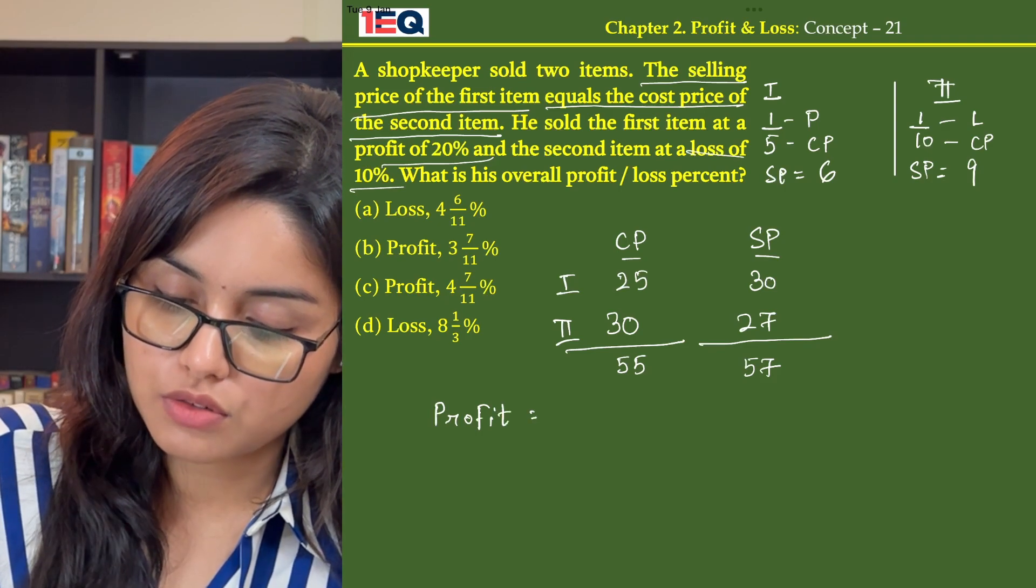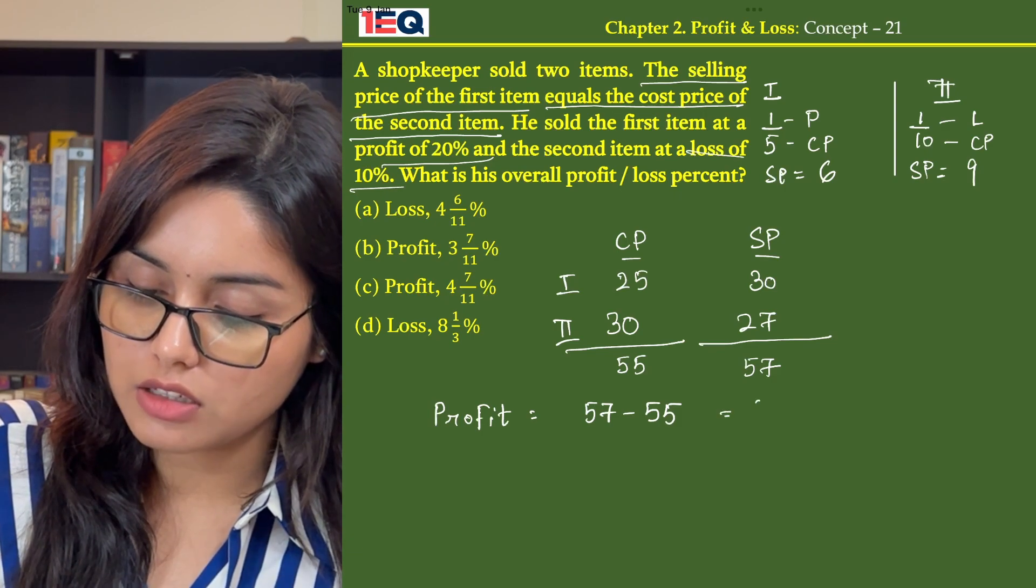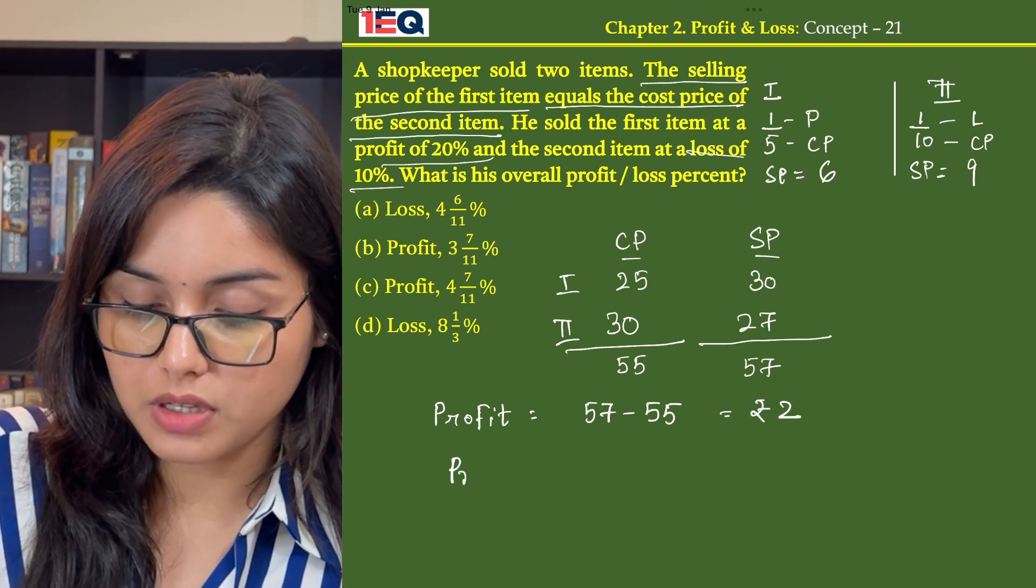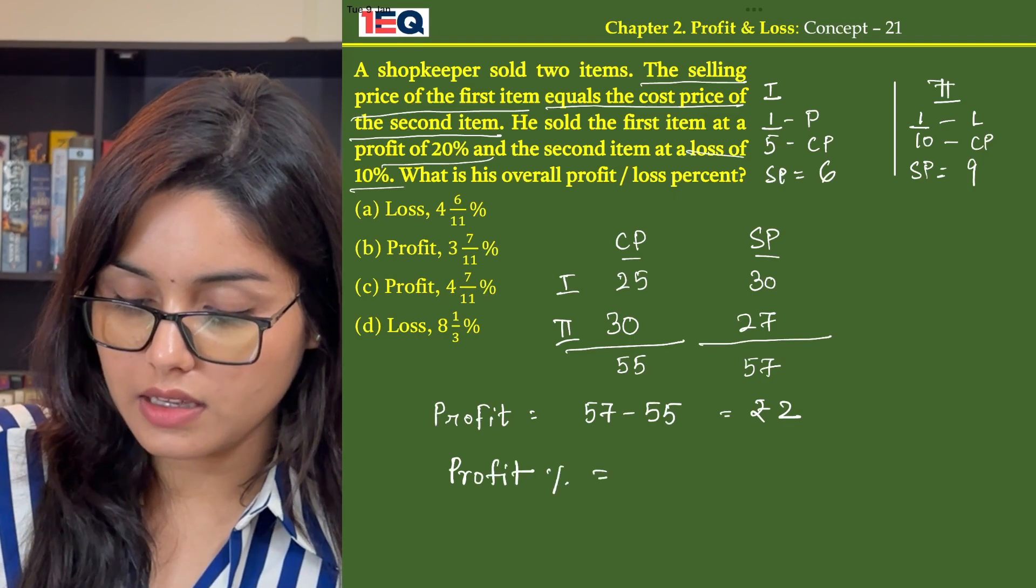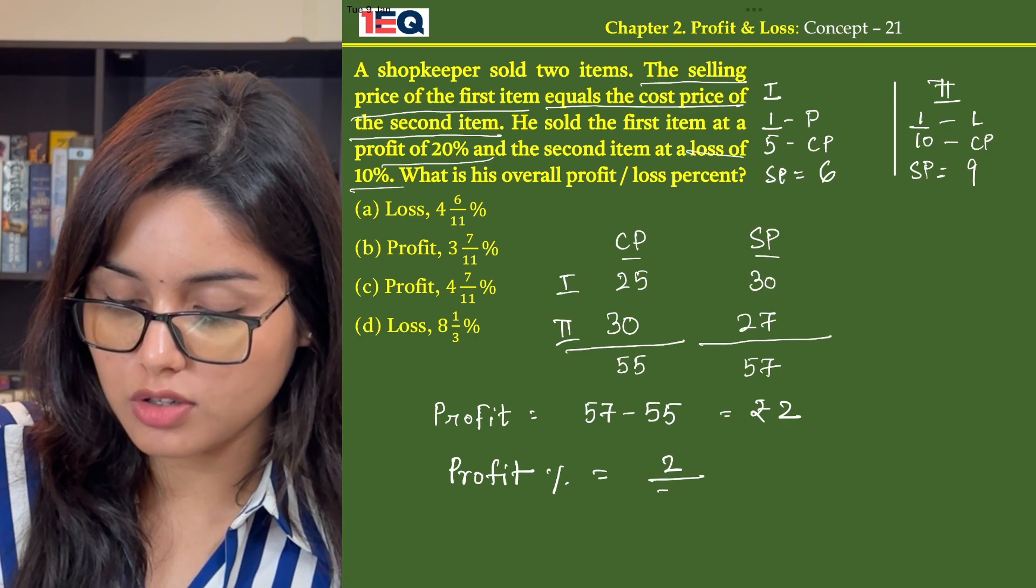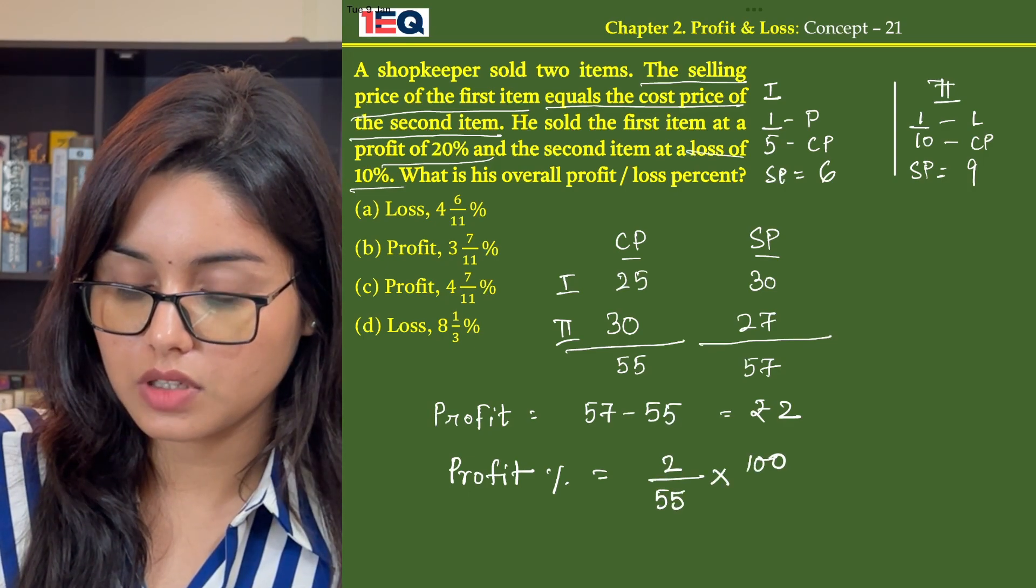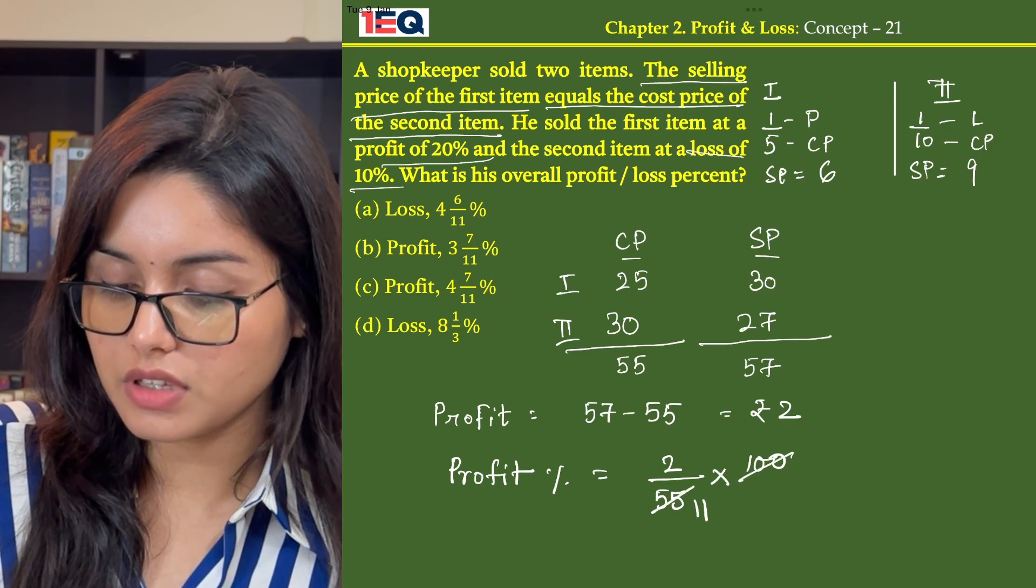Profit equals 57 minus 55, that is rupees 2. And profit percentage is 2 by my cost price in 200. On dividing by 5, we get 11, we get 20.